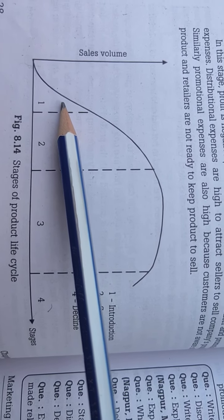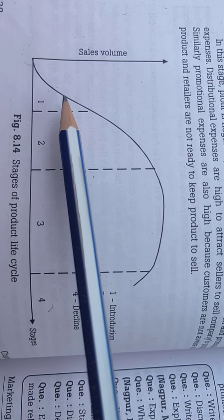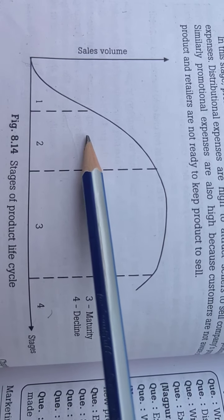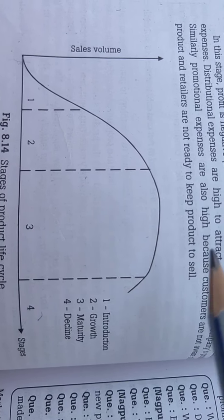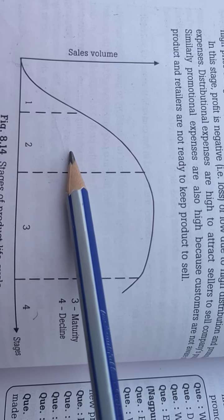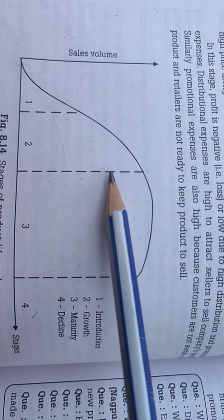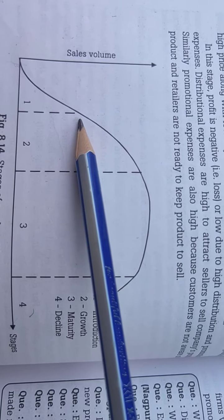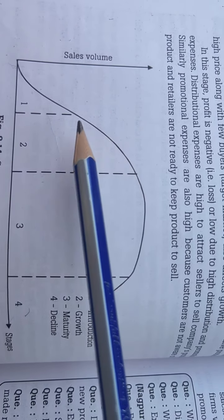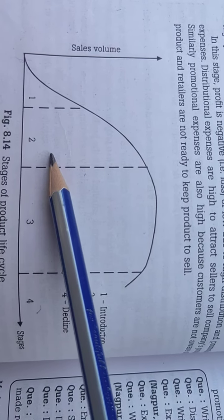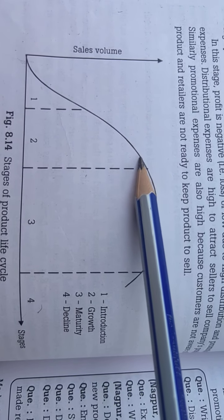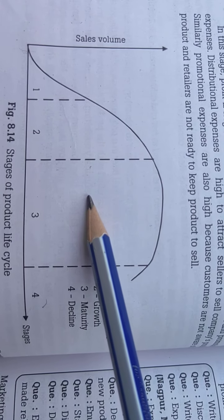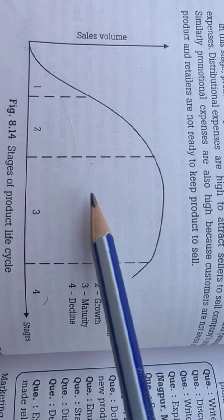The product is just introduced into the market and very few customers are aware of it. Once the initial customers purchase the product, they give feedback to other consumers who then become aware of it. A large number of customers then purchase the product — this happens in the growth stage, where sales volume also increases.